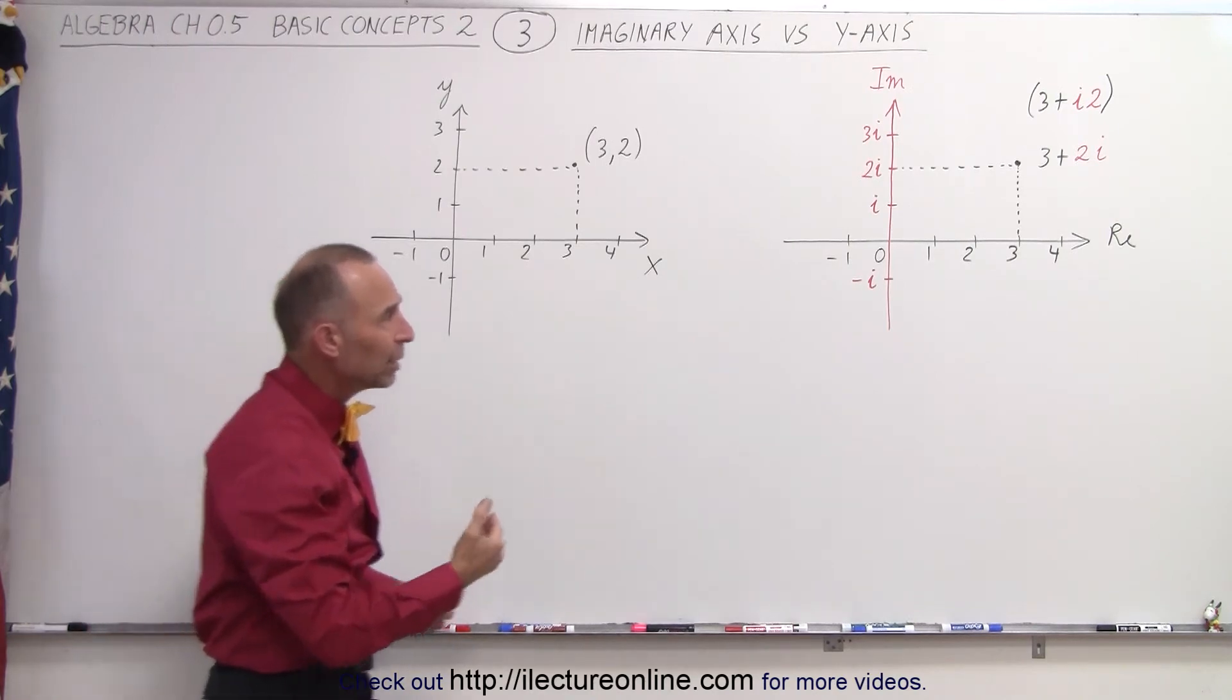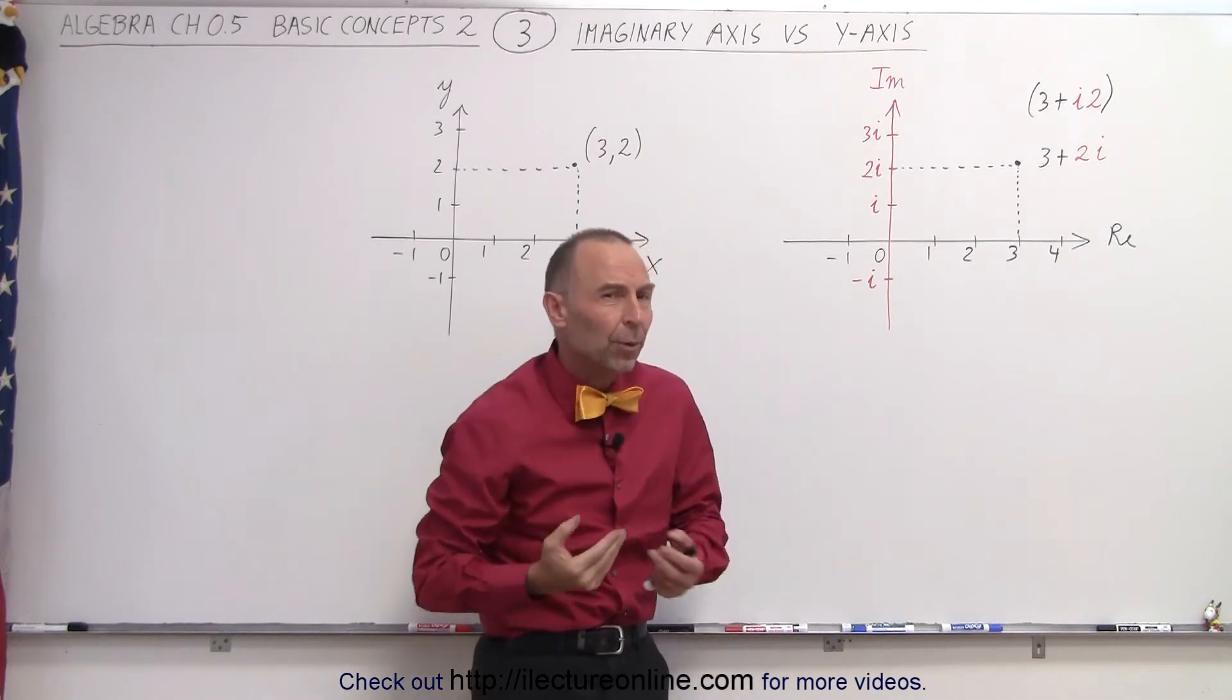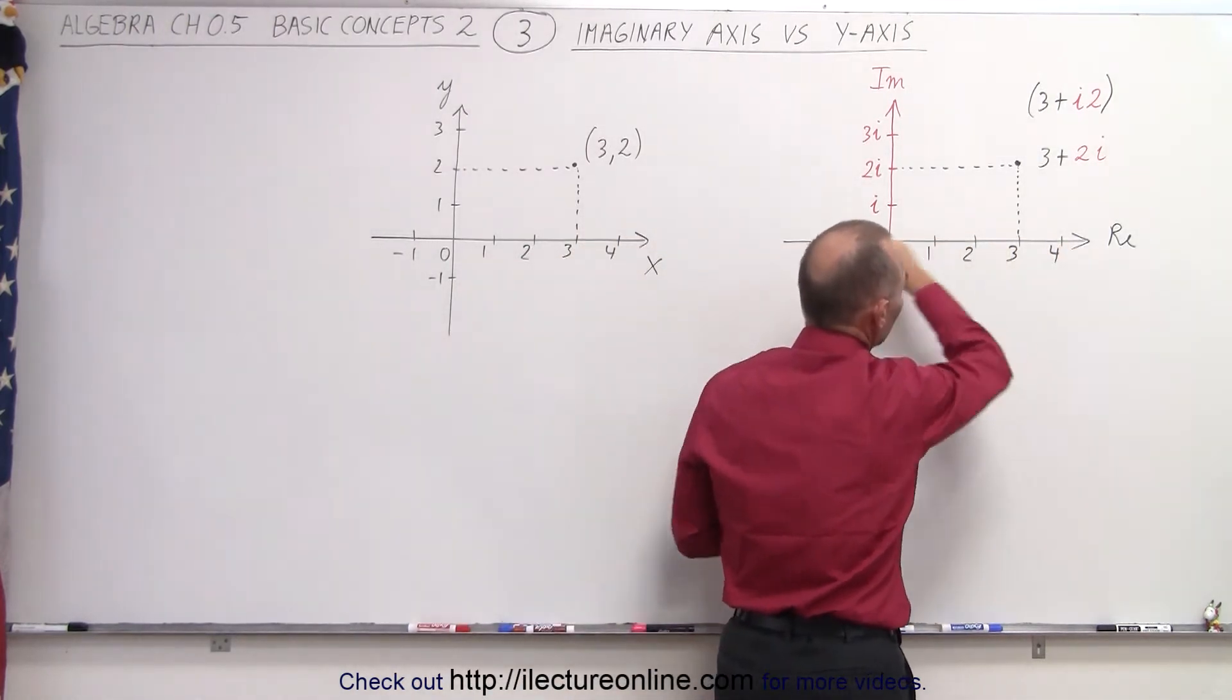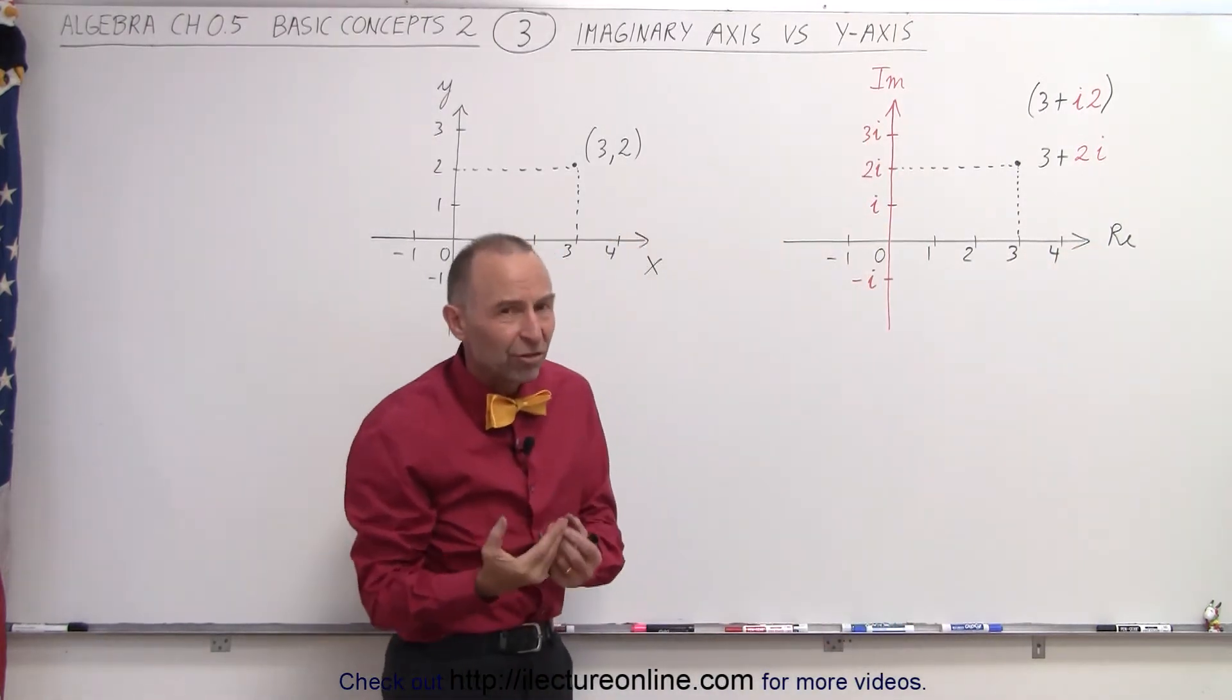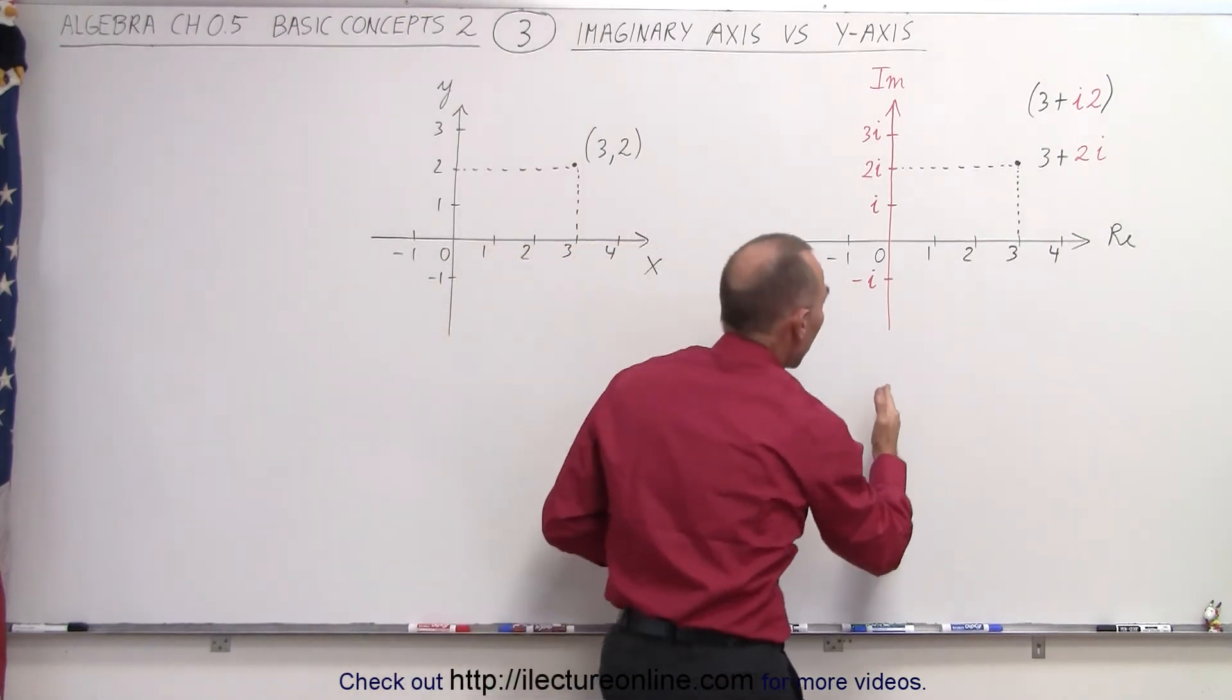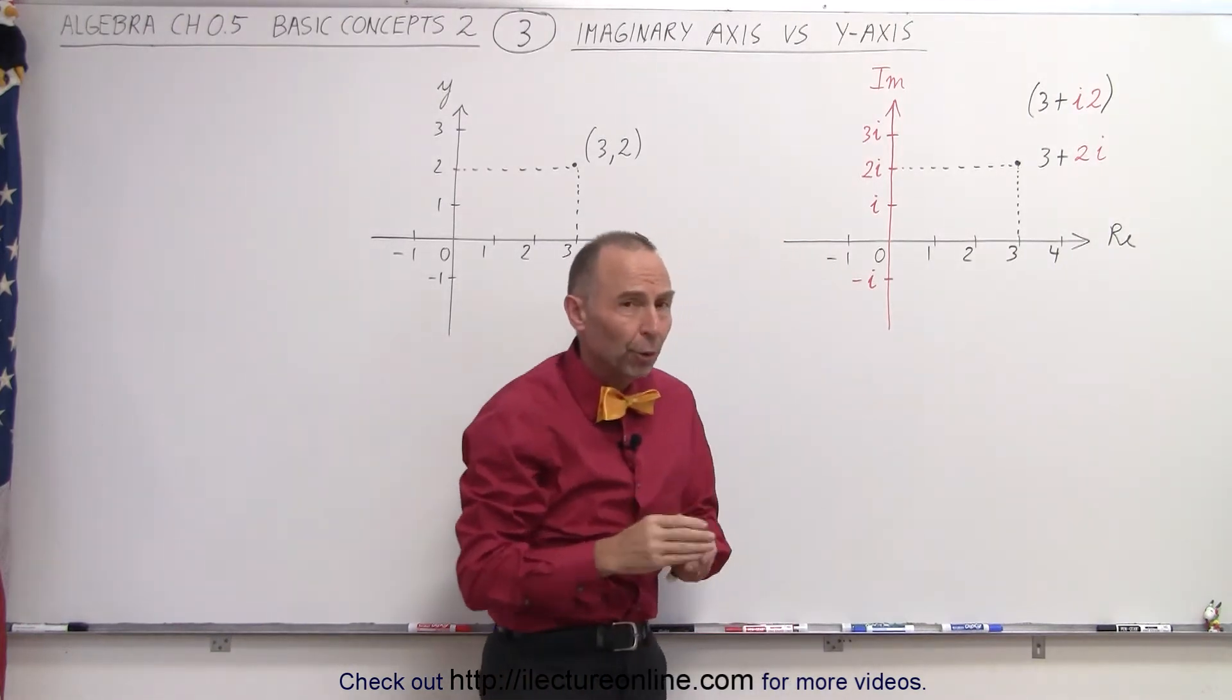When we look at the real axis and the imaginary axis, those are two axes that represent numbers. The horizontal axis, the real axis, represents all the real numbers. And then the vertical axis, the imaginary axis, represents the imaginary part of any number. Now, if we're purely on the axis, on the vertical axis, there's no real part to the number.